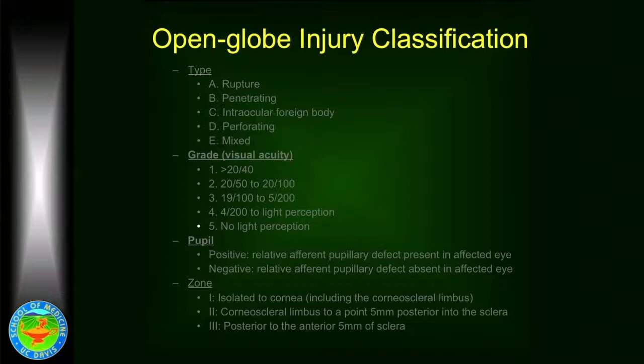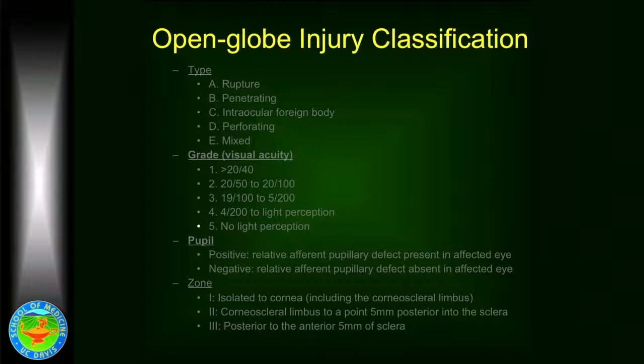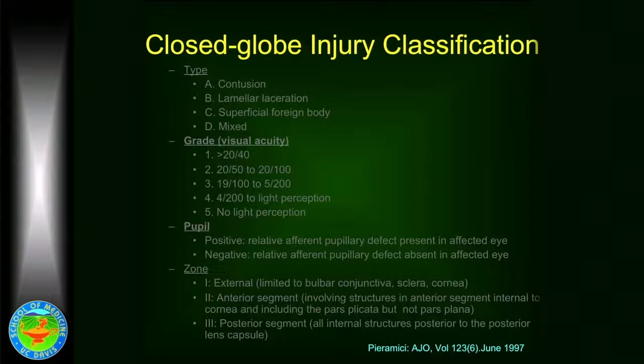The difference between penetrating and perforating is that perforating goes inside the eye, while penetrating is only partial thickness. There are ways in which we can grade the trauma. Certainly visual acuity is important — good visual acuity usually signals a good prognostic outcome. The other important indicator is the presence or absence of an afferent pupillary defect, and finally the location of the injury.